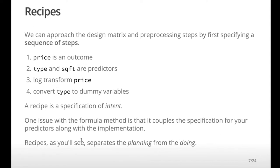So we came up with this idea of something called a recipe — there's a big food analogy happening here. A recipe is a sequence of steps: you're making lasagna, it tells you the ingredients, how to assemble it, then bake it. For our linear model, step one declares price as the outcome, step two declares predictors type and square footage, step three says log-transform price, and step four converts type into dummy variables.